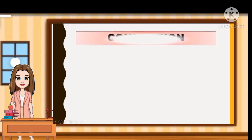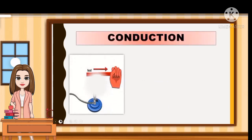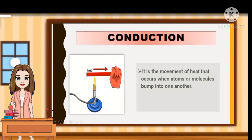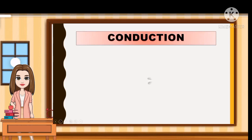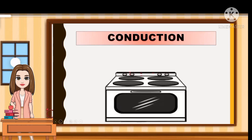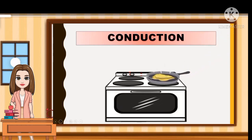First, let us study conduction. It is the movement of heat that occurs when atoms and molecules bump into one another. Energy is transferred by direct contact — the key word here is direct contact. Conduction happens when a warmer object touches a cooler one. When you cook with a burner or stove, the burner touches the bottom of the iron pan, and heat energy flows from the atoms of the pan to the atoms of the food being cooked.